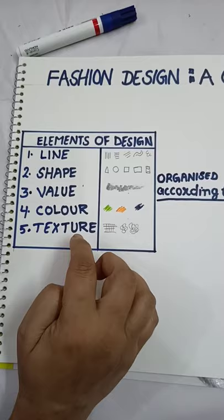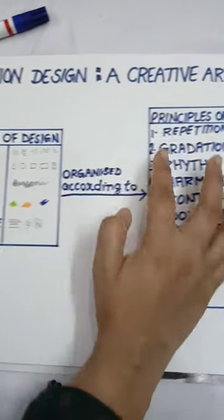shape, line, value, color, texture, which are organized according to principles of design: